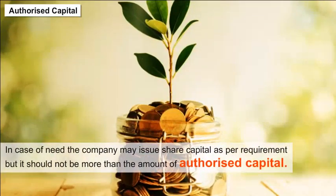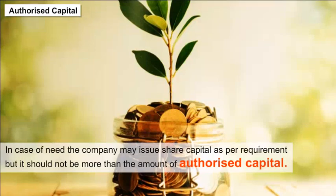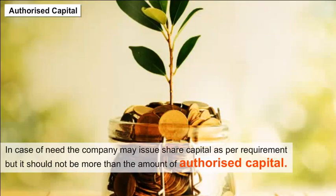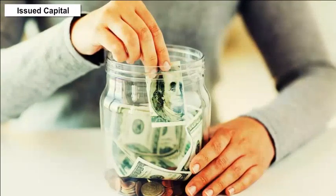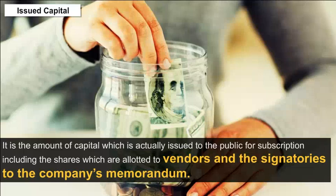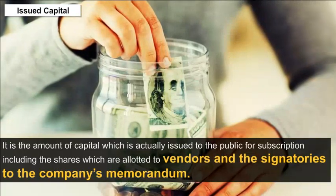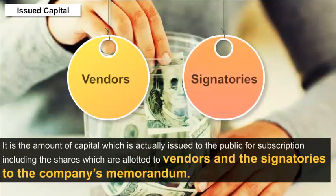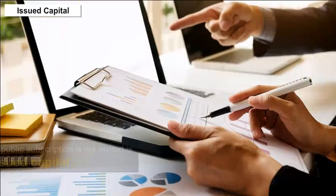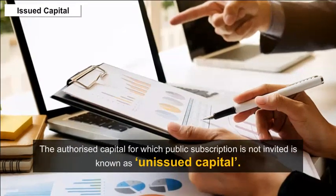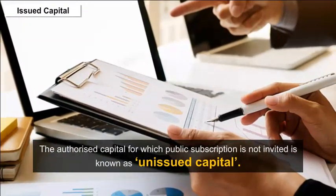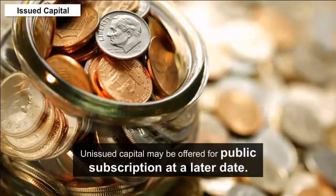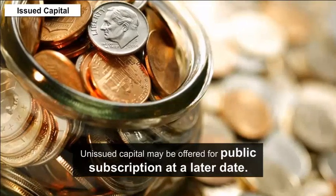It is not necessary for the company to issue the whole authorized capital for public subscription at a time. In case of need, the company may issue share capital as required, but it should not exceed the authorized capital. Issued Capital is the amount of capital which is actually issued to the public for subscription, including shares allotted to vendors and signatories to the company's memorandum. The authorized capital for which public subscription is not invited is known as unissued capital, which may be offered for subscription at a later date.